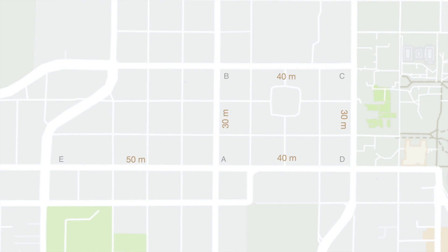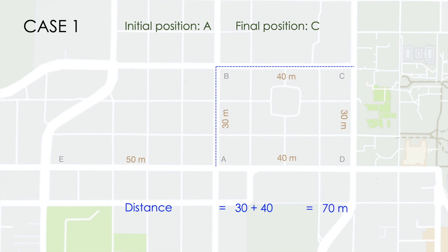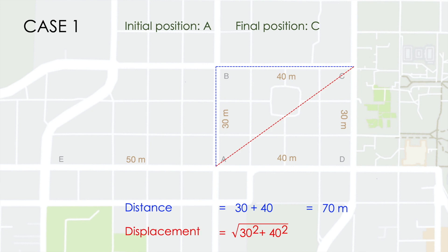Let us say we are in a city and there are several positions A, B, C, D and E. In our first example, our initial position is A and our final position is C. The distance travelled would be from A to B to C, and therefore the distance would be equal to 70 metres. However, the displacement is the direct path from A to C, because that is the shortest. And therefore, displacement as calculated by the Pythagorean theorem would be equal to 50 metres.